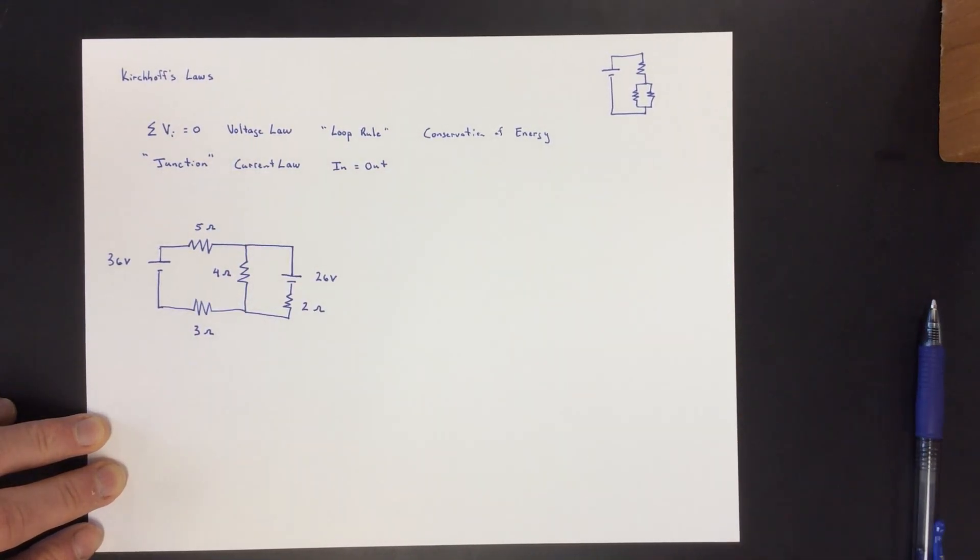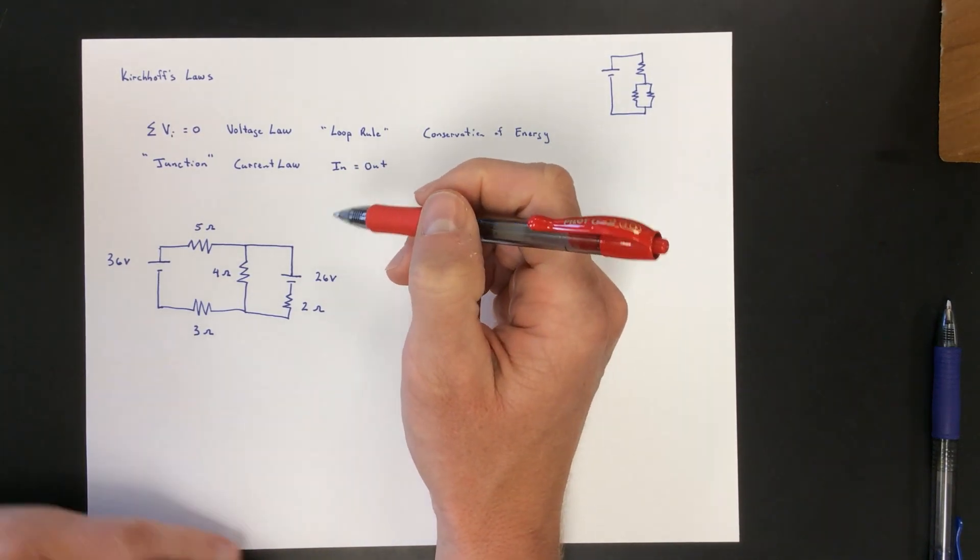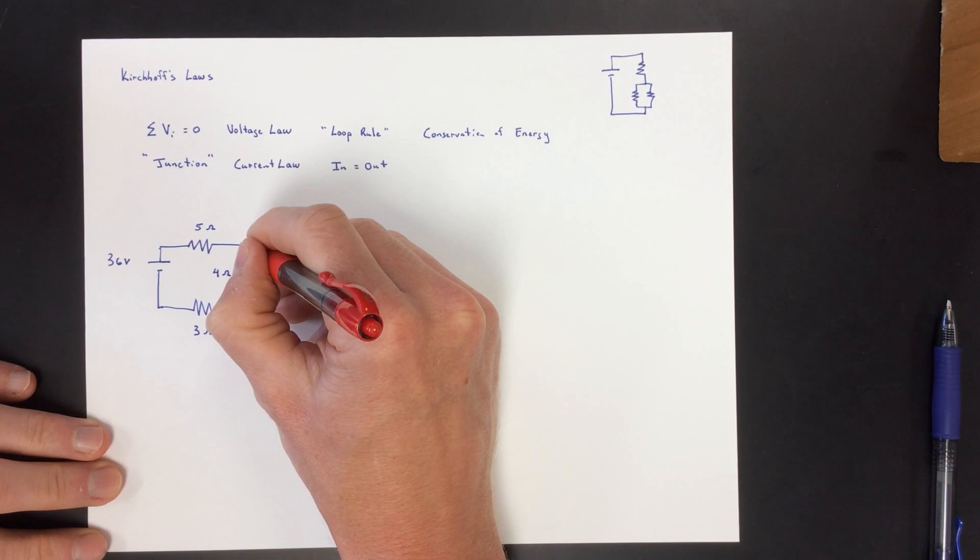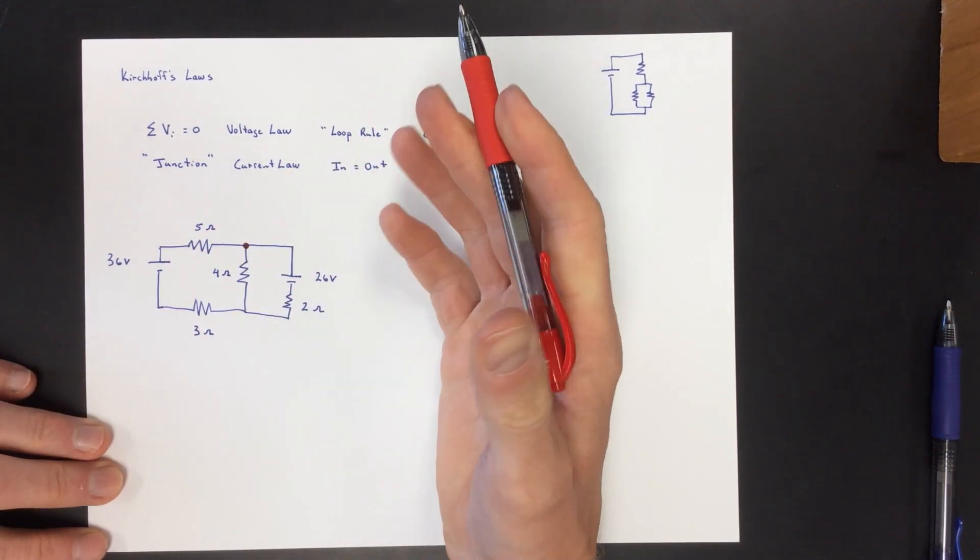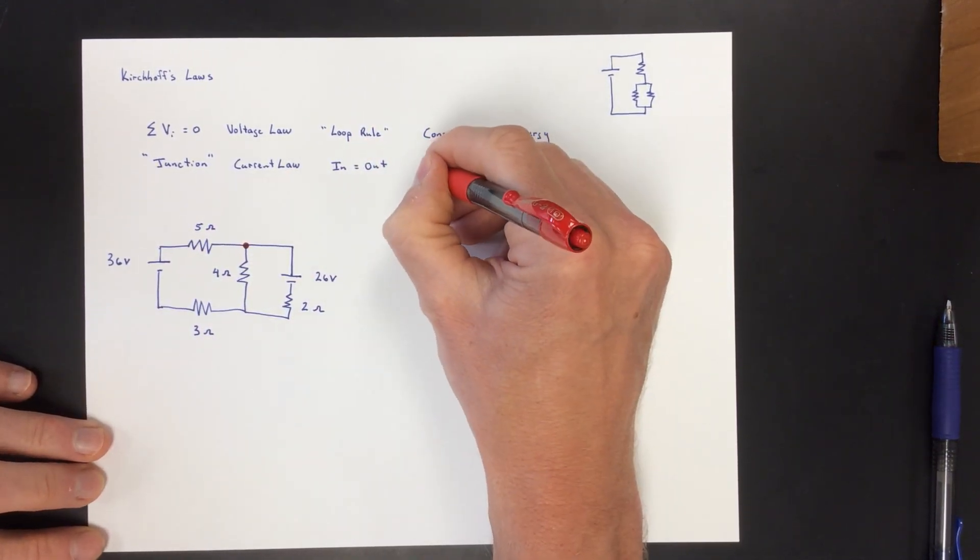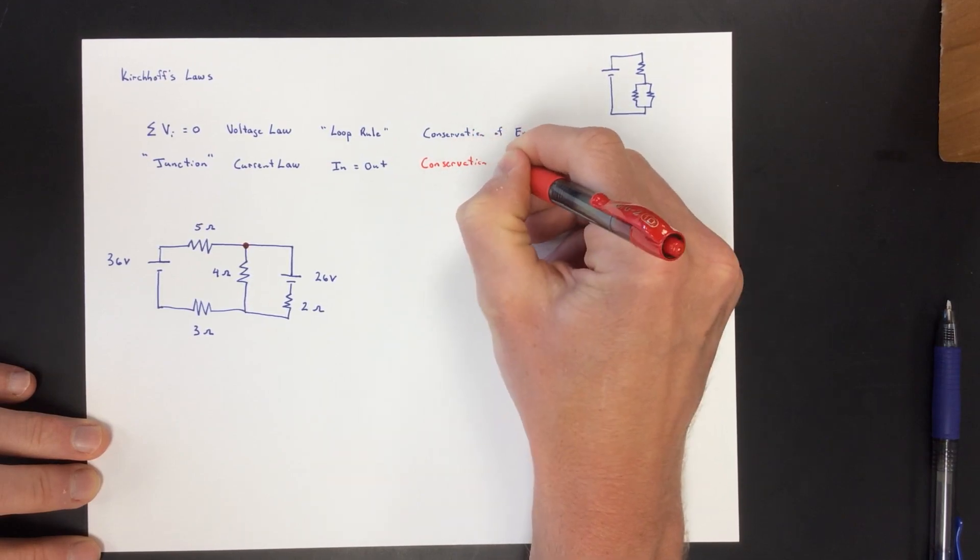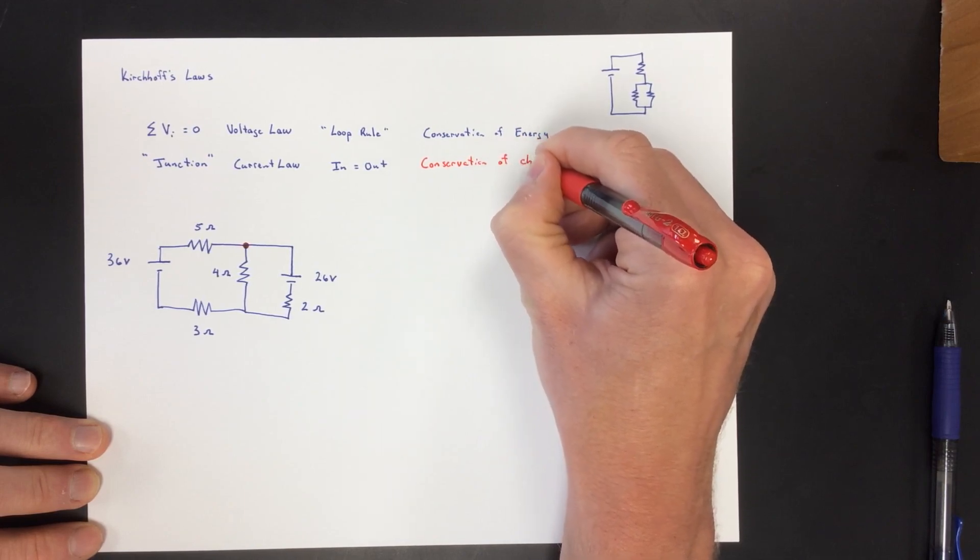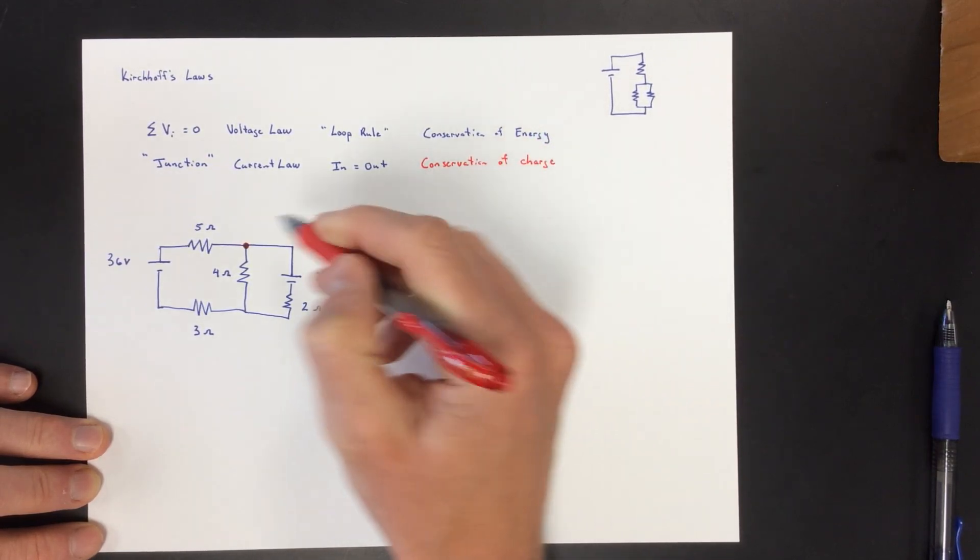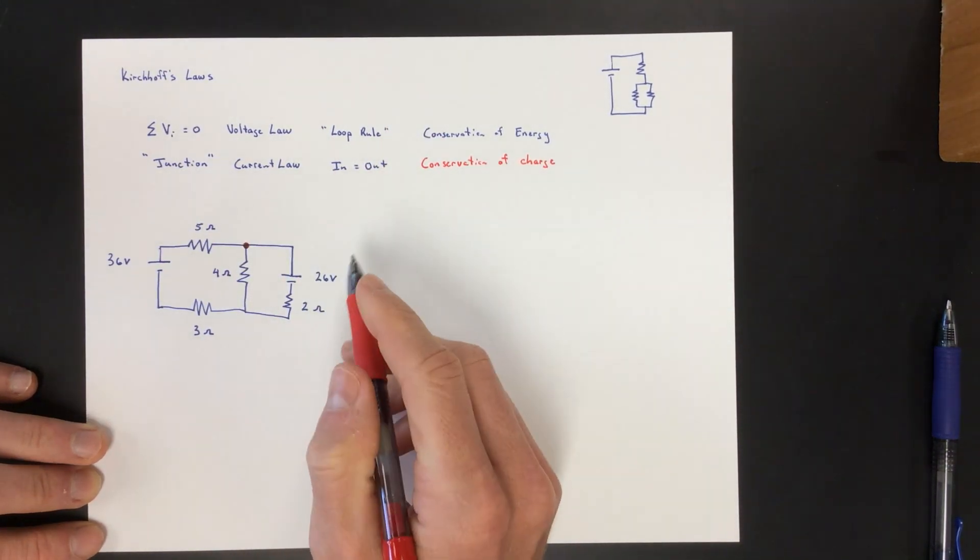The junction rule is really a current rule, and it's talking about the current that flows into a junction is the current that flows out of a junction. There's a certain current that might be coming in, and there's a certain current going out, and it's conservation of charge. No charges can leave the system.